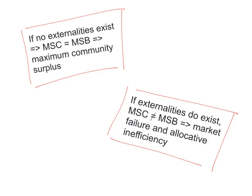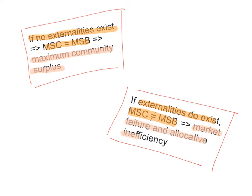If no externalities exist, the marginal social cost will equal marginal social benefit and this means that the community surplus will be maximized. But in the case of the existence of externalities, marginal social cost will not equal marginal social benefit, and in this case we have market failure and allocative inefficiency.